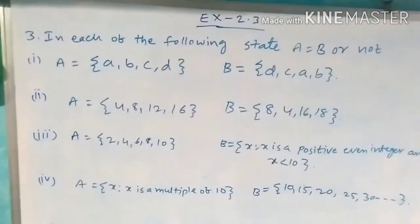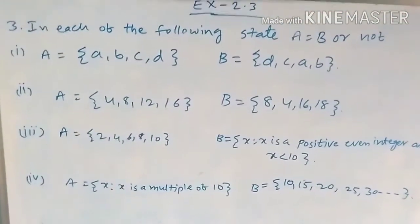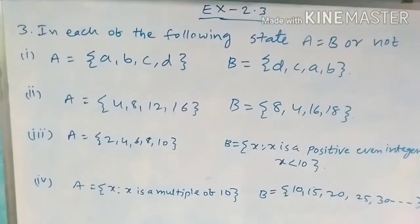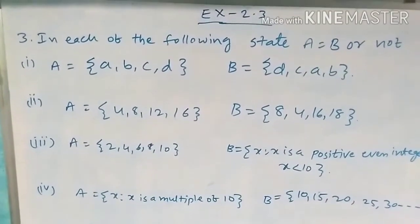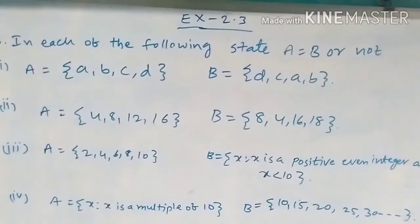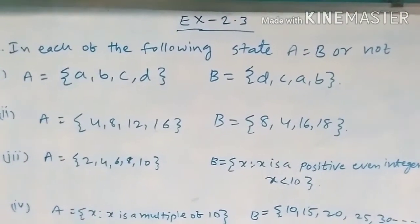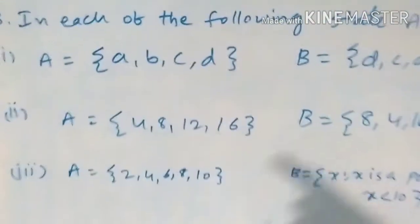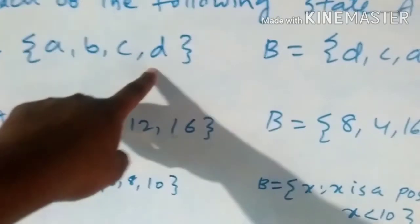Hi students, welcome to my channel Rakesh Tutorials. Today our topic is Sets, Exercise 2.3, third question: in each of the following, state whether A is equal to B or not. First question: A is equal to {a, b, c, d}.